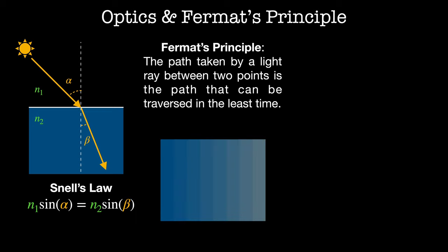Here's a material which has slabs of width delta x with linearly decreasing indices of refraction. If I were to send a light ray into this medium, it would follow this trajectory here. It turns out that Fermat's principle gives us a solution to this that is identical to the brachistochrone.